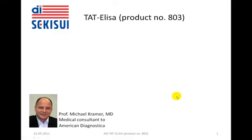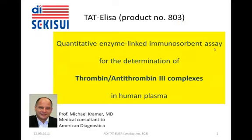In this presentation, you will learn more about American Diagnostica Sekisui's product number 803, the so-called TAT ELISA. This is a quantitative enzyme-linked immunosorbent assay for the determination of thrombin-antithrombin-3 complexes in human plasma.